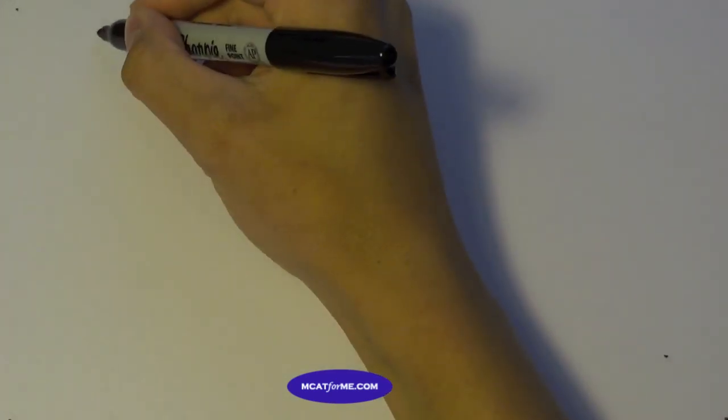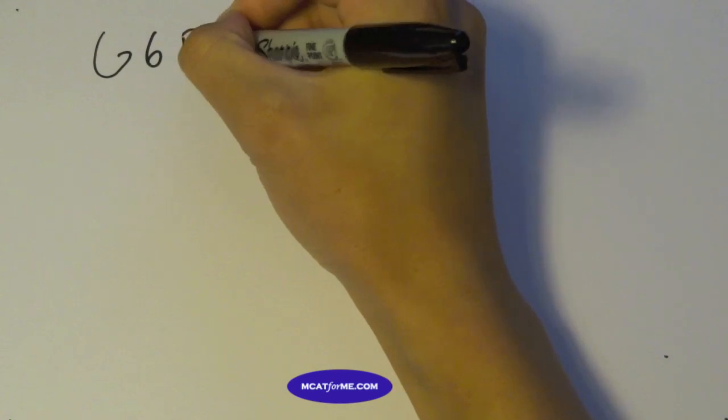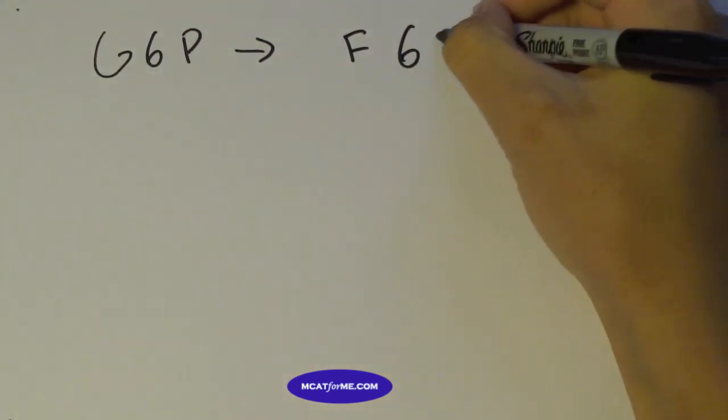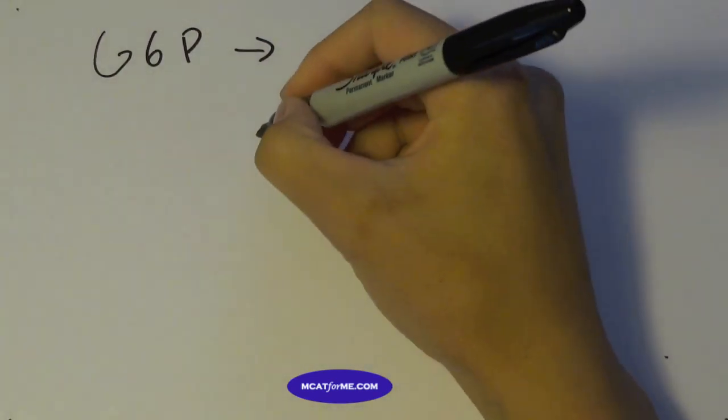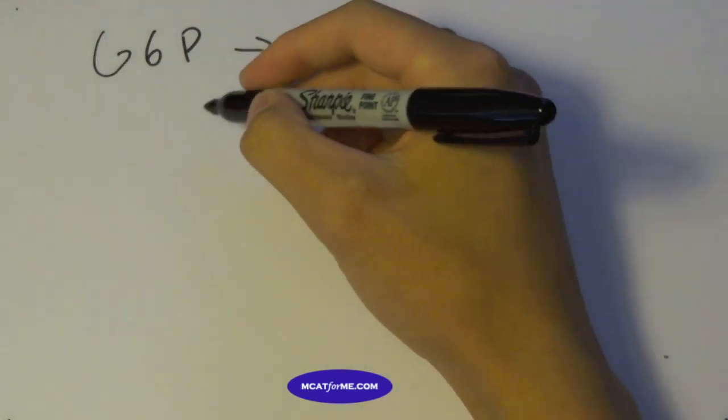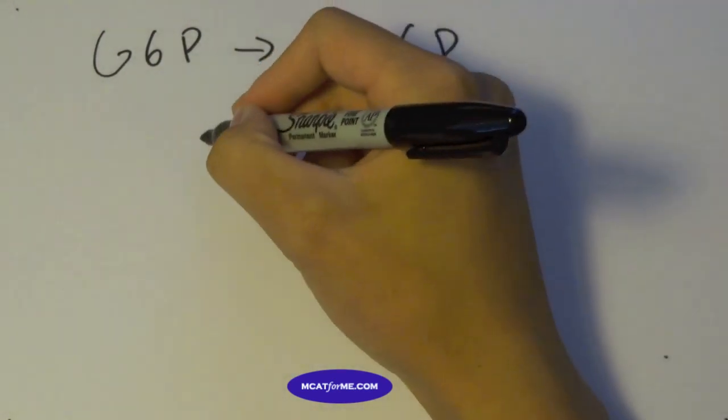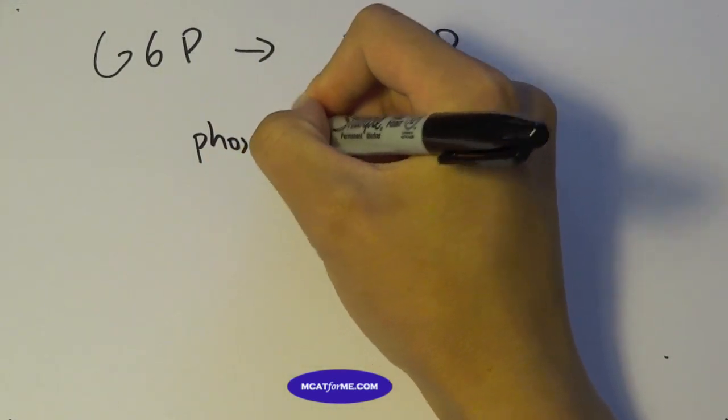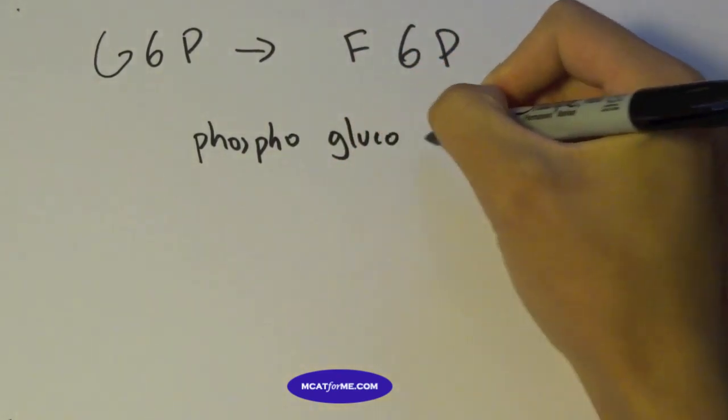I'm going to help you guys find the easy way to remember them so that you don't have to know every single one, but you can just know their classifications. So for example, if they gave you something like glucose 6-phosphate to fructose 6-phosphate, do I actually need to know that the enzyme that does this is phosphoglucoisomerase?